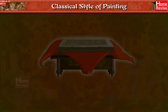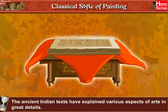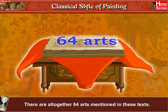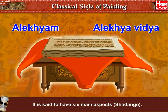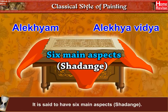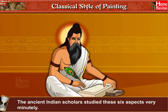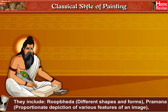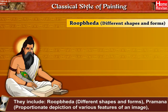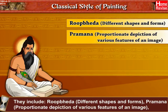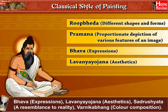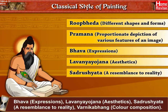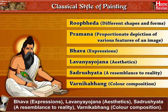The ancient Indian texts explained various aspects of arts in great detail, mentioning altogether 64 arts. The art of painting is referred to as Alekhyam or Alekhya Vidya in these texts and is said to have six main aspects called Shadanga. These six aspects studied minutely by ancient Indian scholars include: Rupabheda (different shapes and forms), Pramaana (proportionate depiction of various features), Bhava (expressions), Lavanya Yojana (aesthetics), Sadrishyata (resemblance to reality), and Varnikabhanga (color composition).